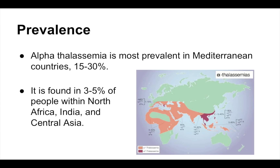Alpha thalassemia is a common disease in certain parts of the world, particularly in the Mediterranean region, where 15 to 30 percent of inhabitants are affected. In other parts of the world, for example in North Africa, India, and Central Asia, 3 to 5 percent of the population is affected.